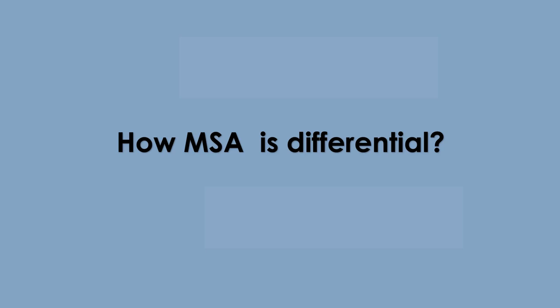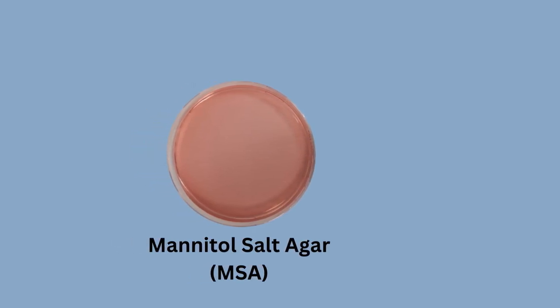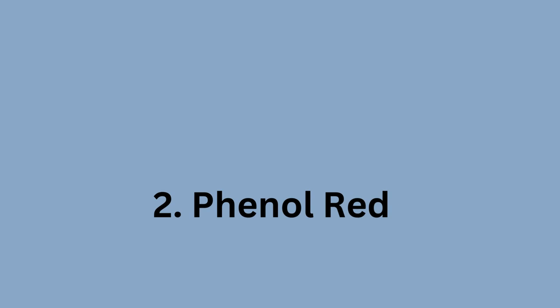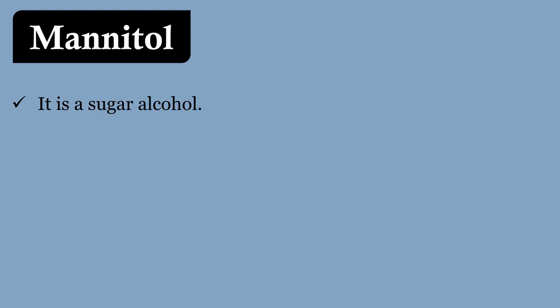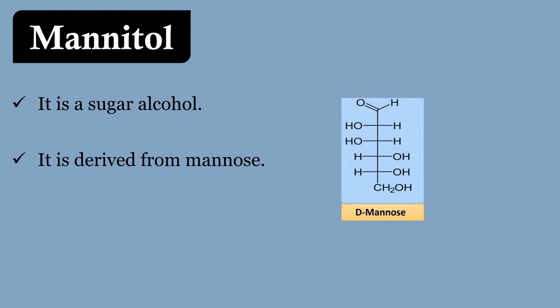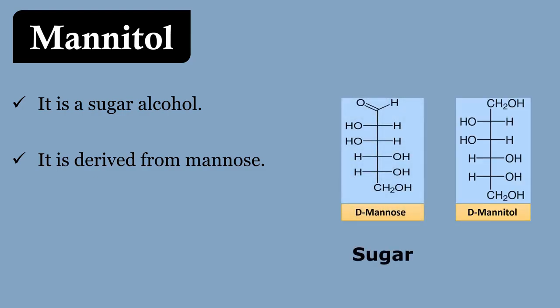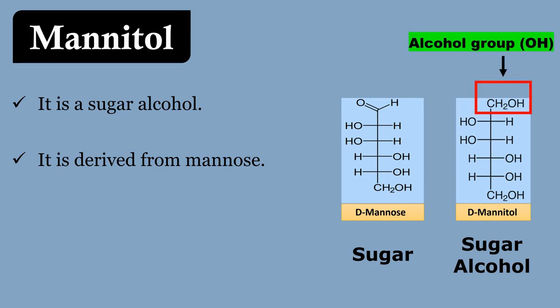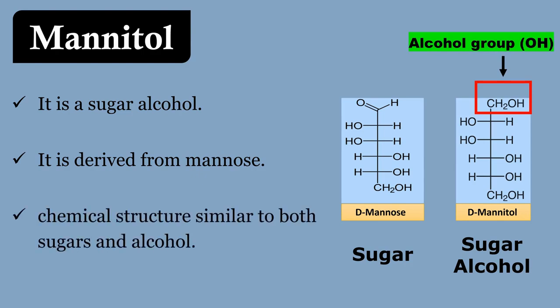Now let's discuss how mannitol salt agar is differential. The two important components which make MSA differential are mannitol and phenol red. Mannitol is a sugar alcohol. It is derived from mannose, which is a type of sugar. This is the structure of mannose sugar, and this is the structure of D-mannitol. You can see the alcohol group attached to this molecule. Therefore, the chemical structure of mannitol is similar to sugar and alcohol.